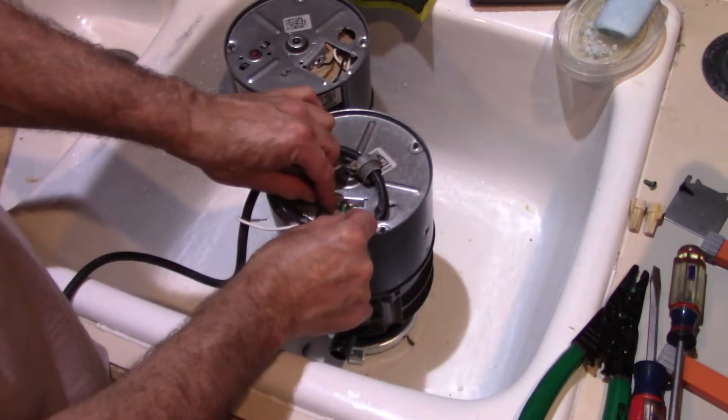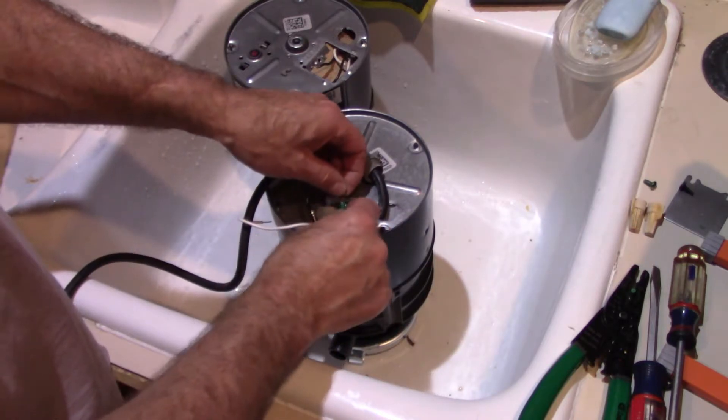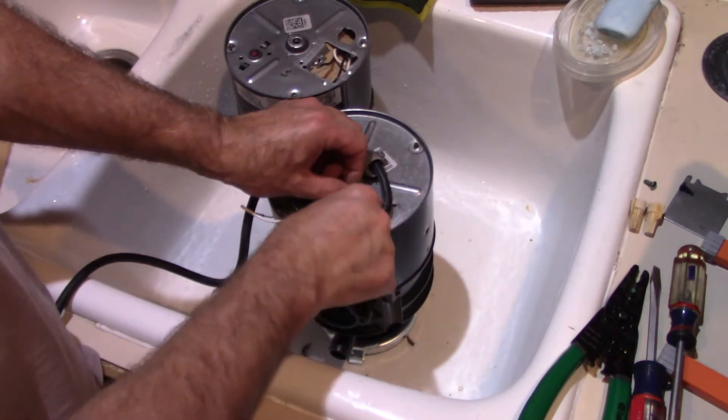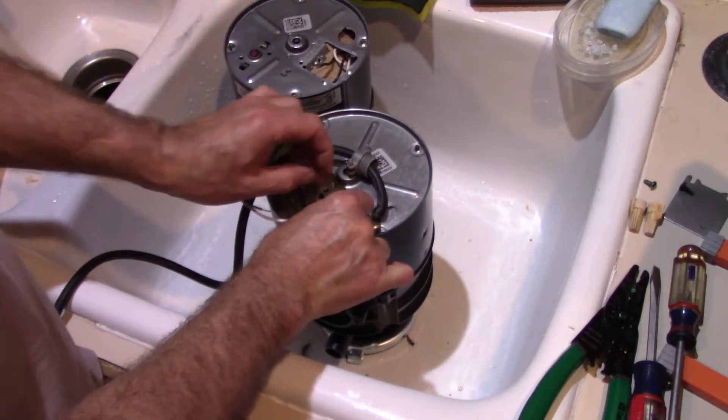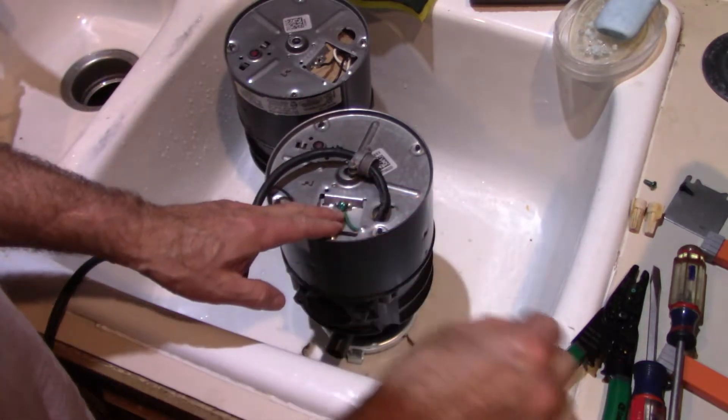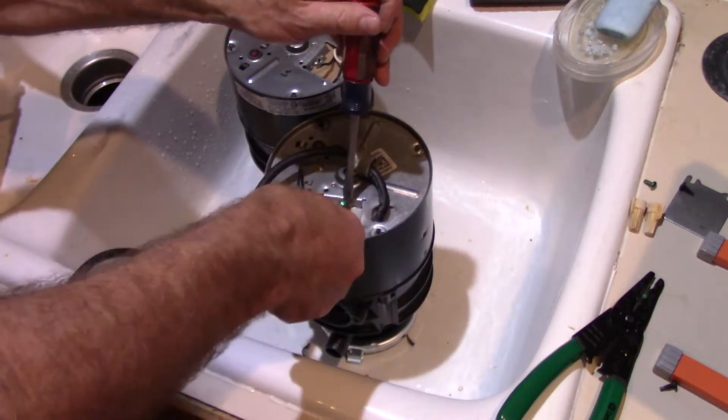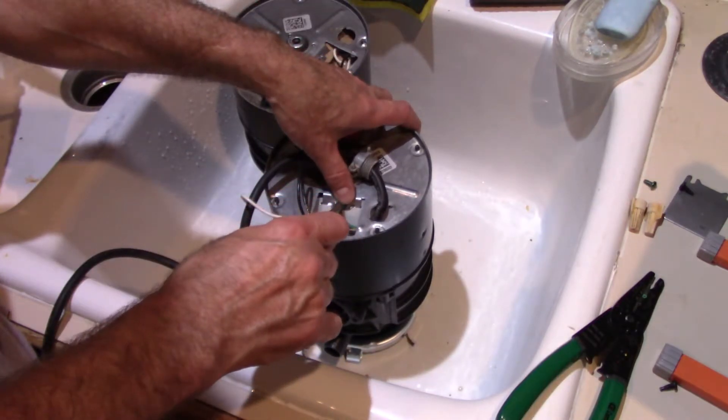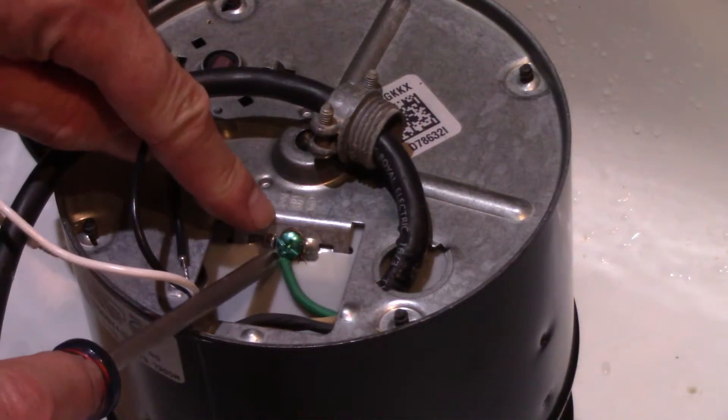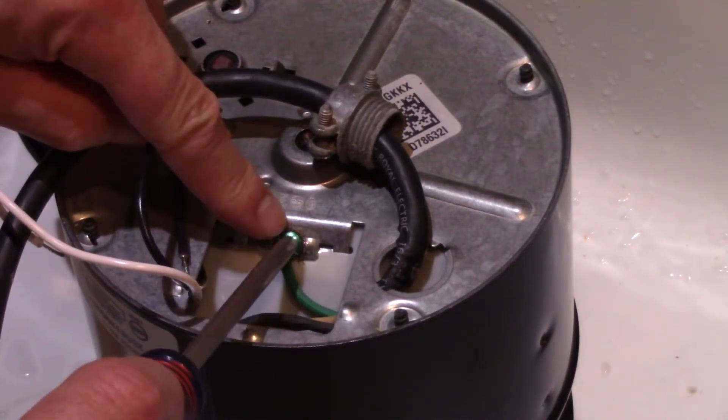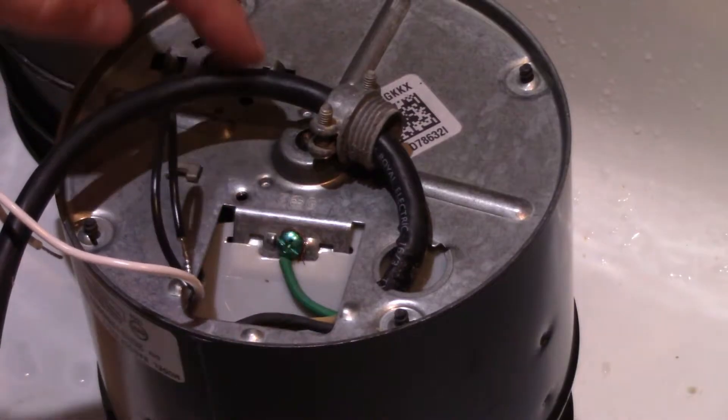Now if I wrap it the other way, when we tighten it, it's going to go against the curl. So we want to go with it as it curls around there. See that? Remember this wraps around this way, so it goes with the direction. The bolt is tightened.